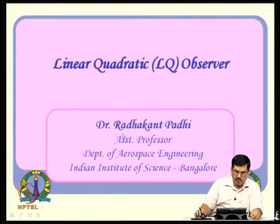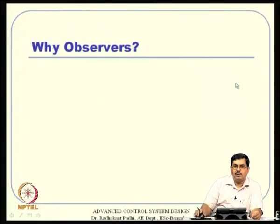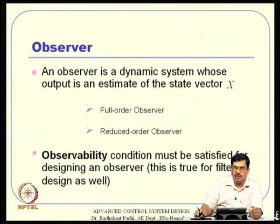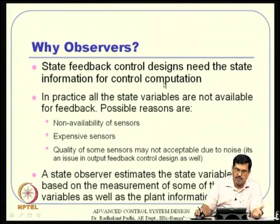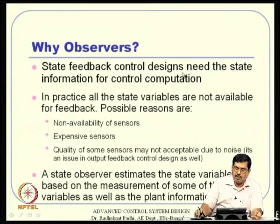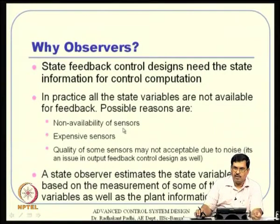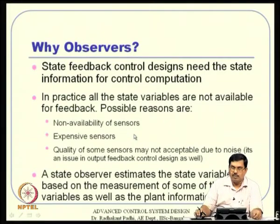A very quick review: observers and estimators are needed because we typically propose state feedback control design, and state information is needed for control computation. Most of the time we may not have sensor-rich systems — either the sensor is not available, or it is expensive, as we discussed last class.